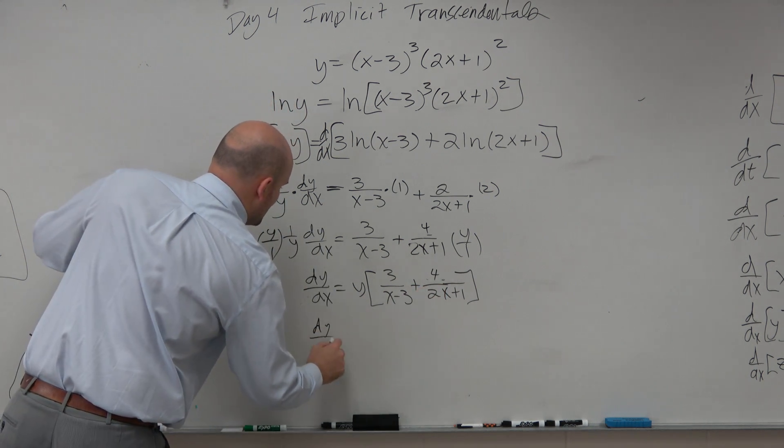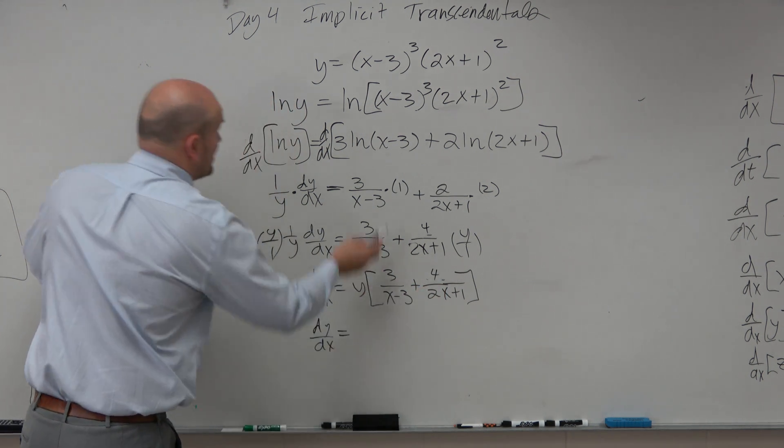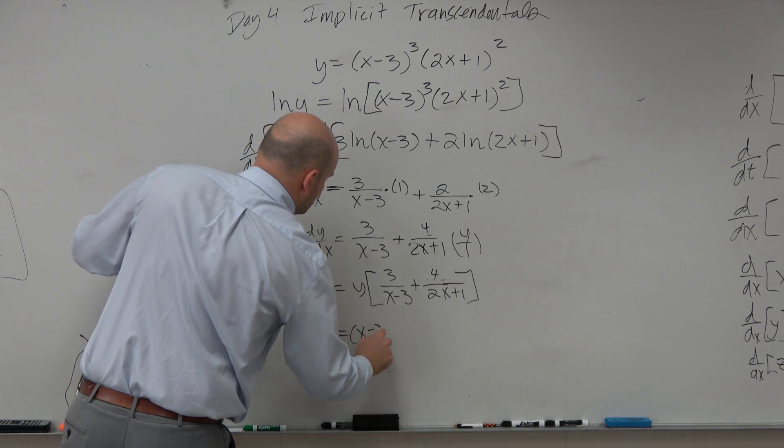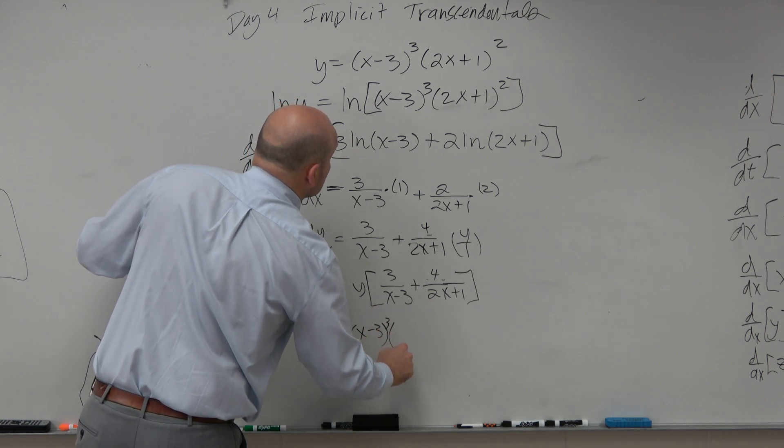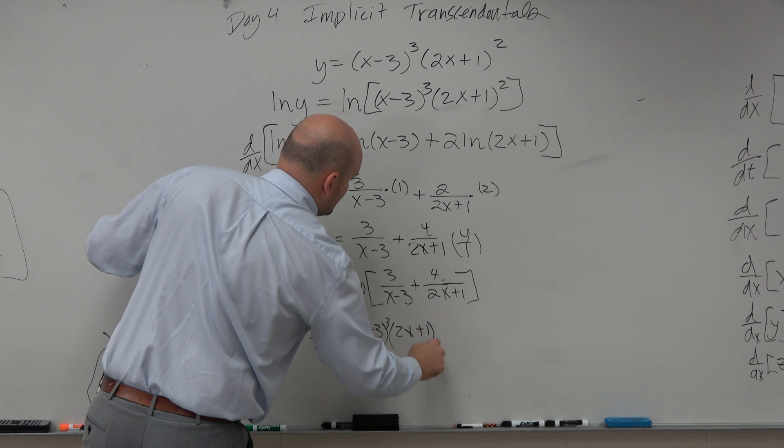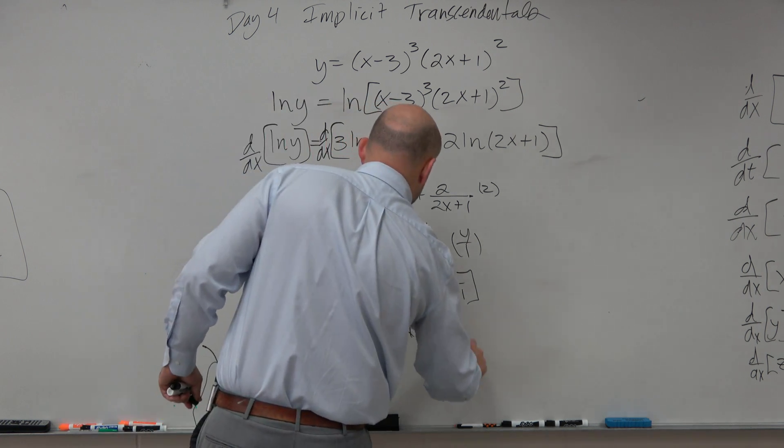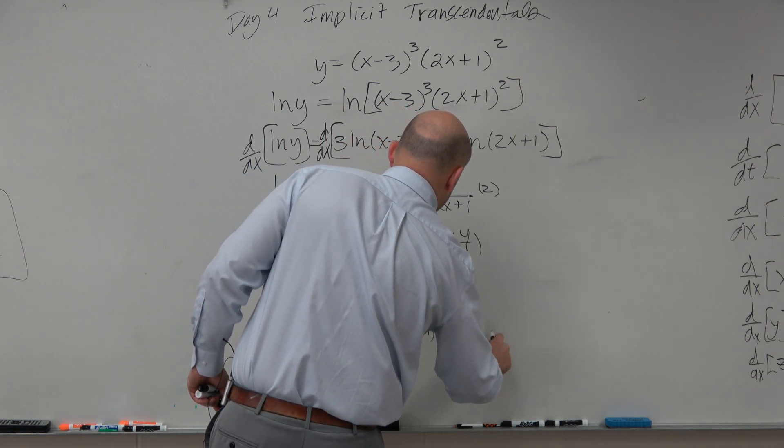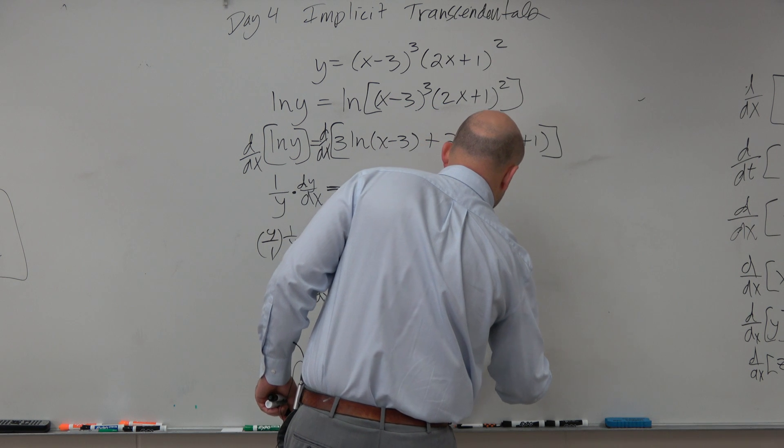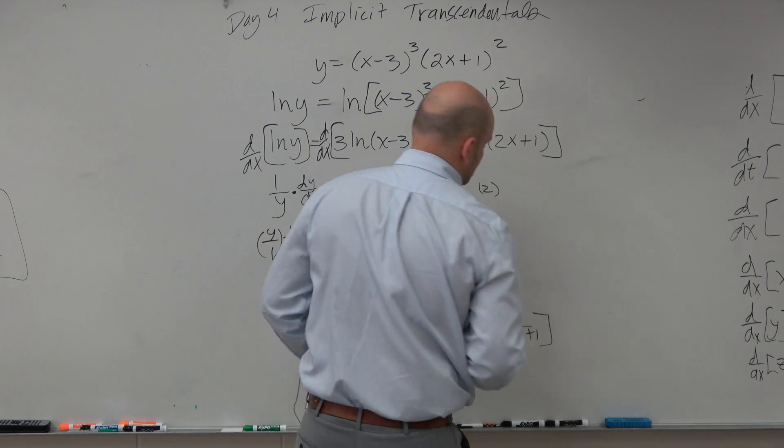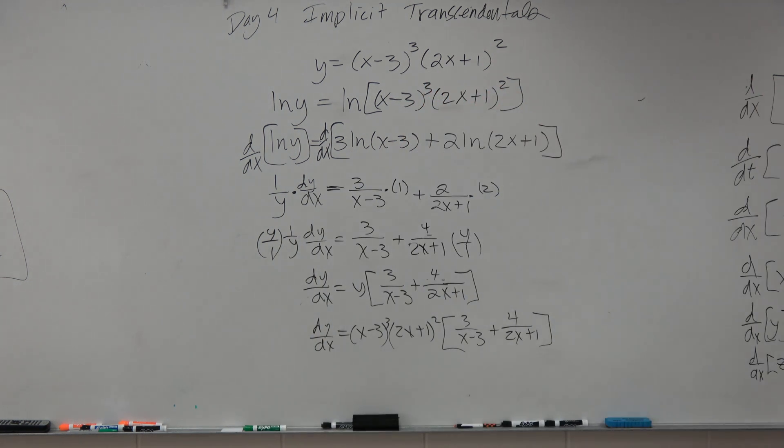So a lot of times, we want to write them in terms of x. So then, we'd write everything back up there. Cubed times 2x plus 1 squared. That times 3 over x minus 3, plus 4 over 2x plus 1.